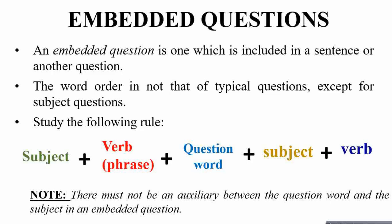The third form of question is embedded questions. An embedded question is one which is included in a sentence or another question. The word order is not that of a typical question, except for subject questions. The structure is: subject, verb phrase, then a question word, then subject and verb — and there must not be an auxiliary between the question word and the subject in an embedded question.